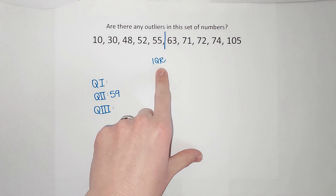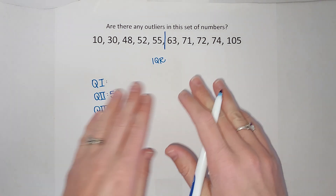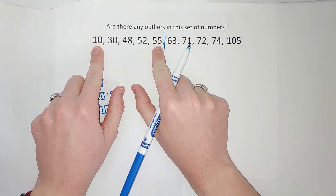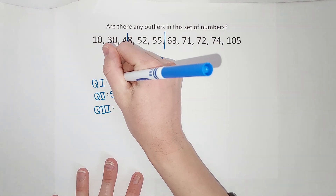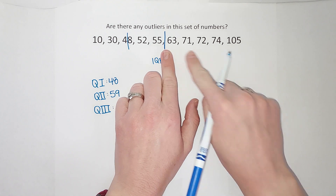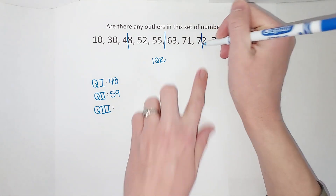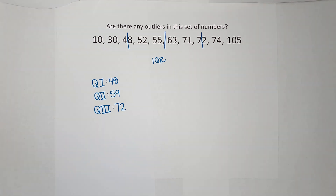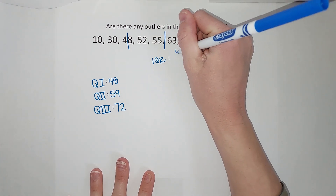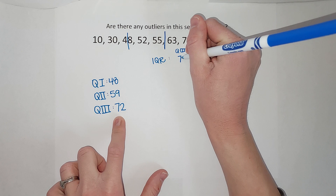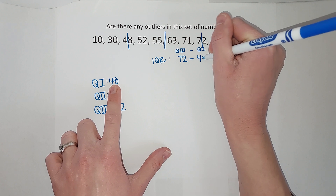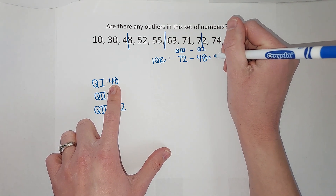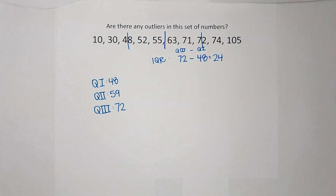I don't actually need quartile two to find my interquartile range, but it helps me find the others. To find my first quartile, I find the middle of the lower half — that's 48. I didn't have to average anything because it was just one number, so quartile one is 48. My third quartile is the middle of the upper half, so it is 72. To find my interquartile range, I take quartile three, which is 72, and subtract quartile one, which is 48, giving me 24. That is my interquartile range.